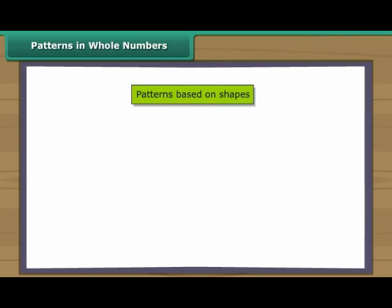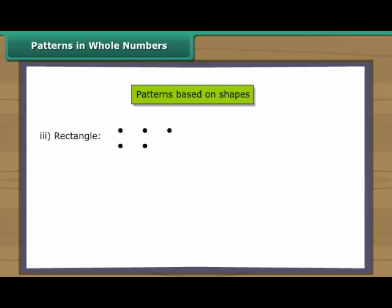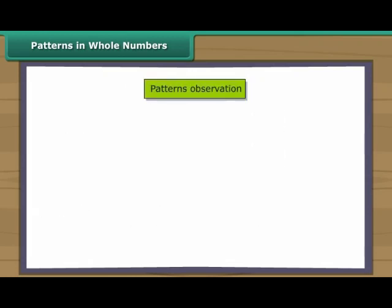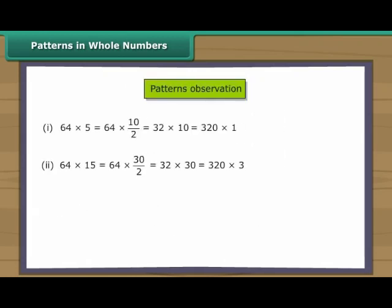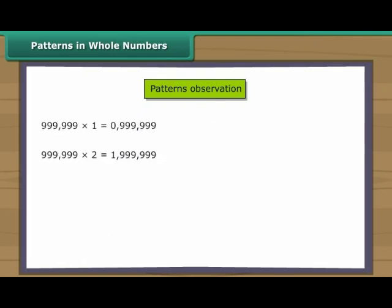Patterns in whole numbers: Numbers can be arranged in some elementary shapes using dots. The shape could be a line, square, rectangle, or triangle. Every number can be arranged as a line. Some numbers can be arranged as squares. Some numbers can be arranged as rectangles — either in a horizontal arrangement or a vertical arrangement. Some numbers can be arranged as a triangle. Sometimes a pattern is observed in whole numbers which can help simplify the calculation process.